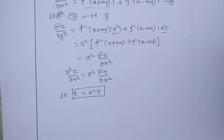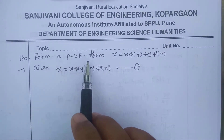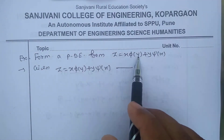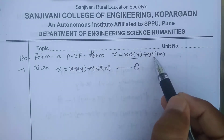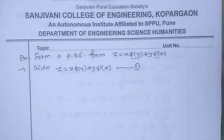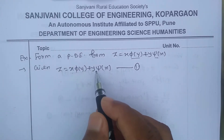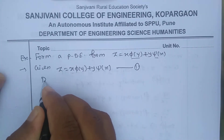The next example: form a partial differential equation from z = x·φ(y) + y·ψ(x). Again, φ(y) and ψ(x) are two arbitrary functions, so we have to eliminate these two arbitrary functions and we will get a second-order or higher-order partial differential equation. Given z = x·φ(y) + y·ψ(x) — call it equation number one. Now differentiate.